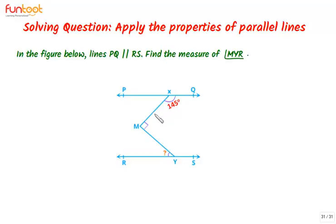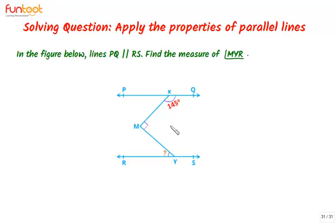In this problem, MX cuts PQ only and MY cuts RS only. Unless we have a transversal — that means a line cutting two parallel lines — we cannot apply properties of angles in a pair of parallel lines. The approach for solving this question should be to convert this problem into a problem of a pair of parallel lines and a transversal.